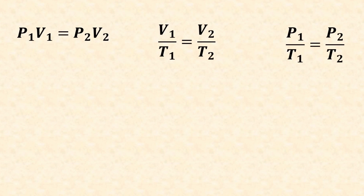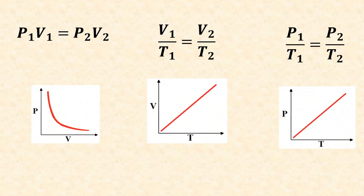Moving on to Unit 3, there are three equations that are very helpful to know that aren't on the equation packet. These are Boyle's Law, Charles's Law, and Gay-Lussac's Law. In theory, you can derive all three of them from the ideal gas law, which is given to you on the exam, but you're really better off knowing these fundamental gas laws. They do expect you to be able to work with these gas laws and the relationships between pressure, volume, and temperature of an ideal gas. Also make sure you know the graphical relationships represented by these three gas laws.